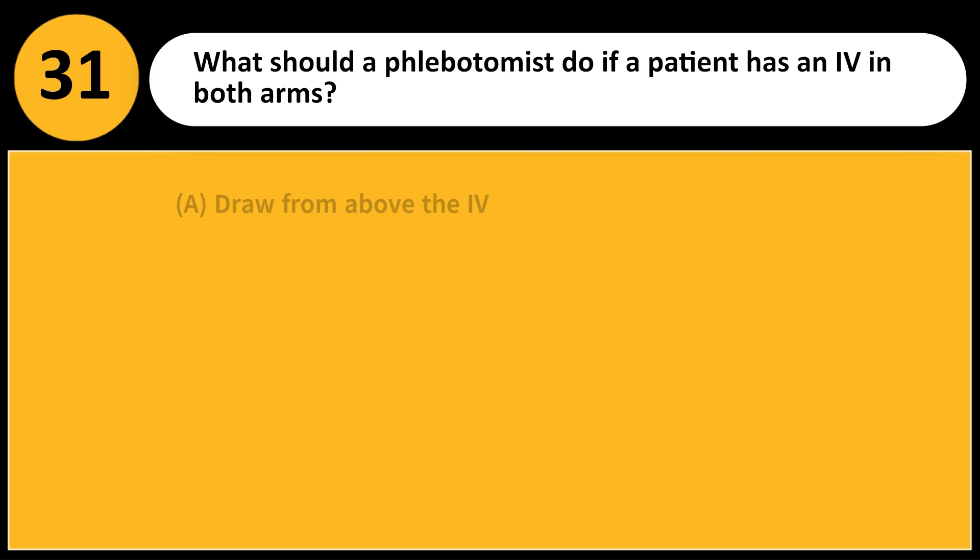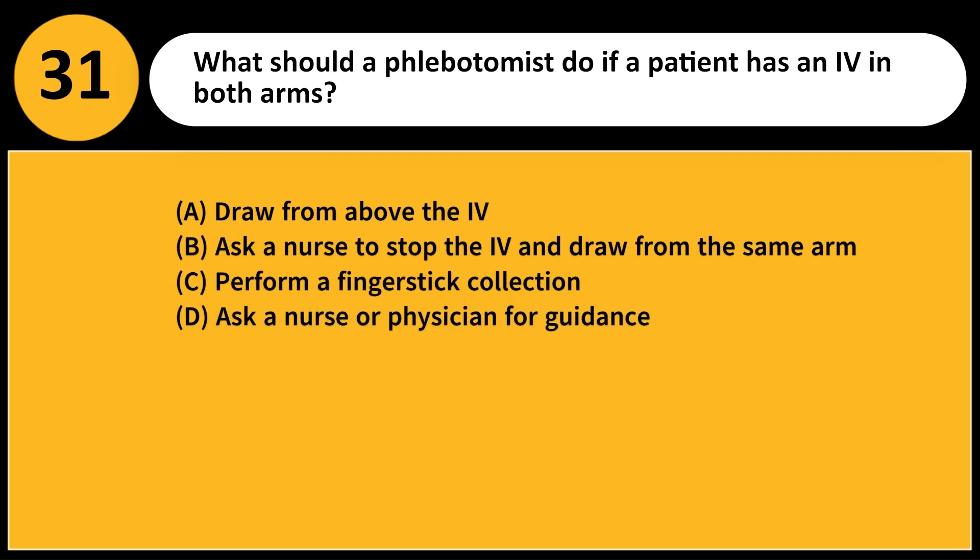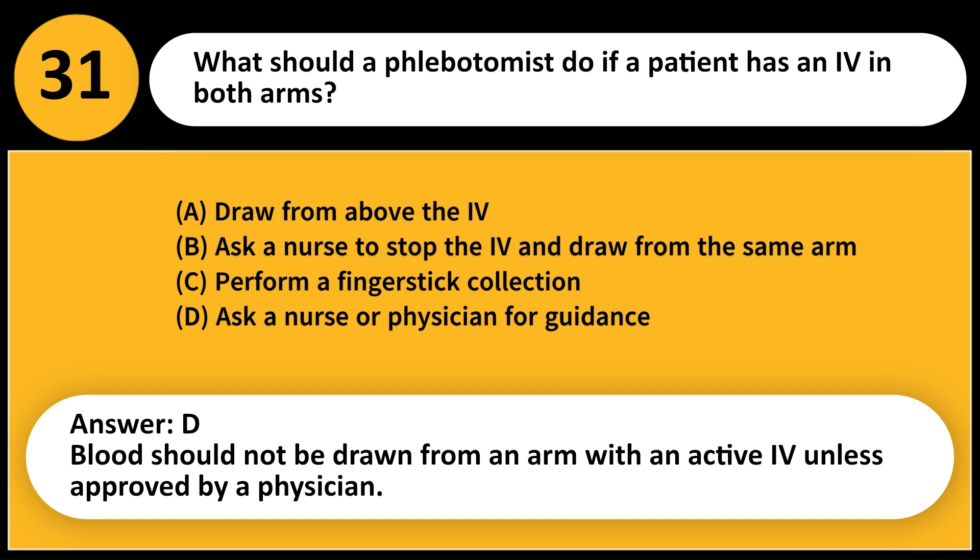What should a phlebotomist do if a patient has an IV in both arms? A. Draw from above the IV. B. Ask a nurse to stop the IV and draw from the same arm. C. Perform a finger stick collection. D. Ask a nurse or physician for guidance. Answer: D. Blood should not be drawn from an arm with an active IV unless approved by a physician.